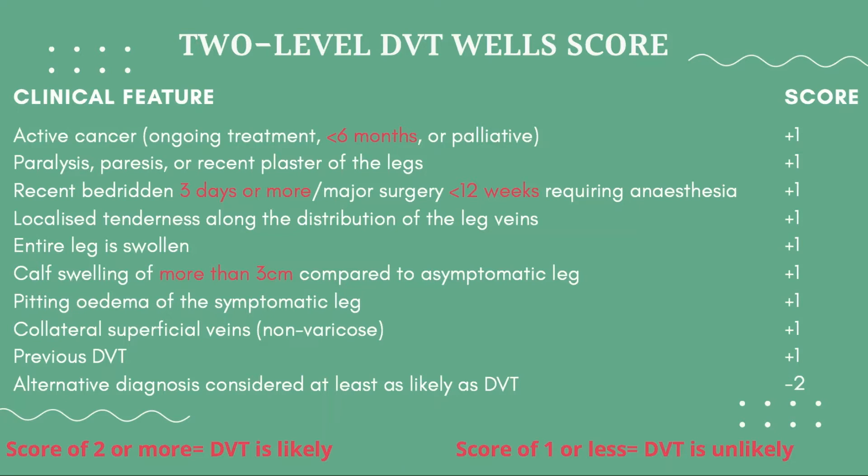A score of 2 or more means DVT is likely, and a score of 1 or less means DVT is unlikely. Feel free to pause the video and calculate the 68-year-old lady's Wells score from the table and from Case 1, and leave a comment below.